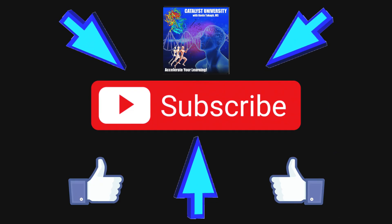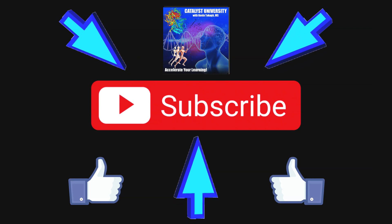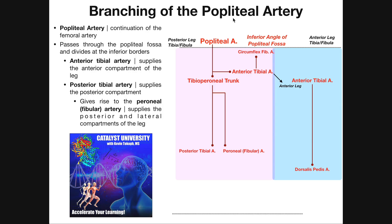Welcome back to Anatomy & Physiology on Catalyst University. In this video, we're going to follow the course of the popliteal artery as it exits the inferior angle of the popliteal fossa and then see some of the major branches that come off of it.